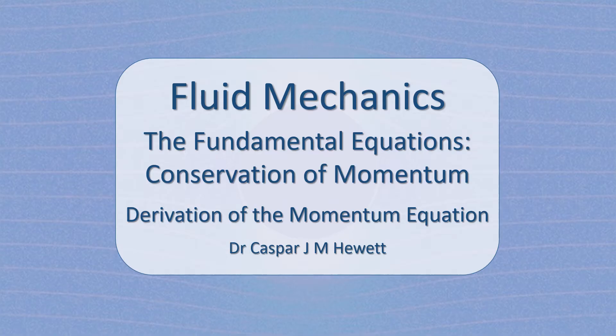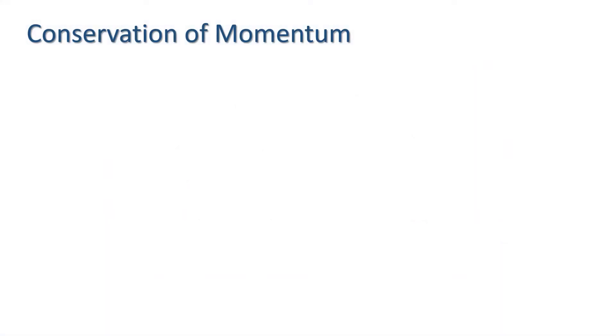In this video I'm going to derive the momentum equation which describes the conservation of momentum in an ideal fluid. First let's remind ourselves of a few of the basics. The momentum of a body is the product of its mass and velocity. Note that momentum is a vector and here I am using the convention of bold letters to denote vectors.